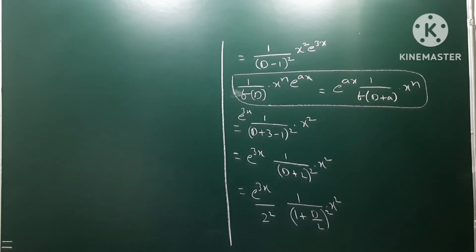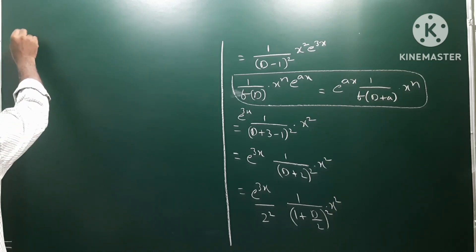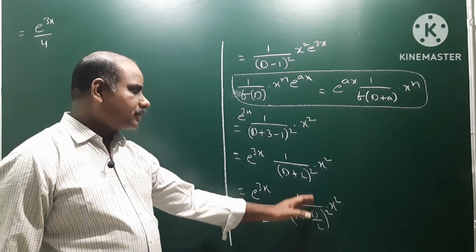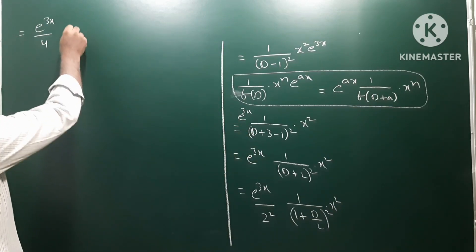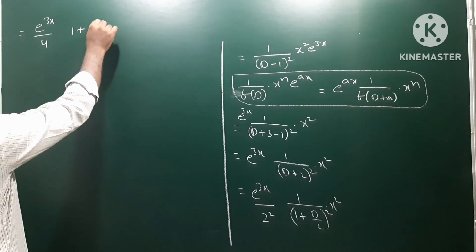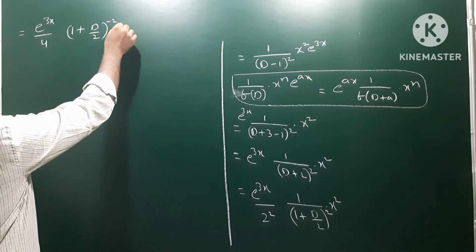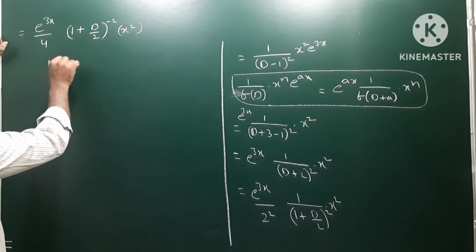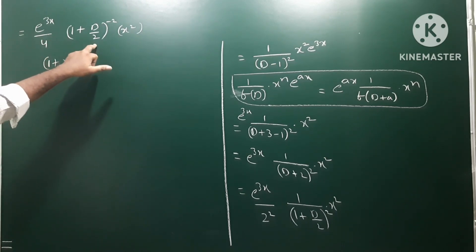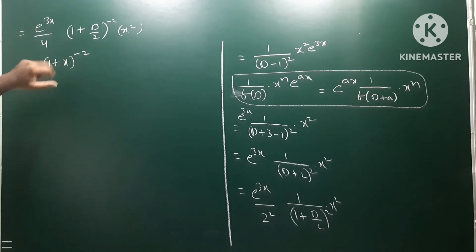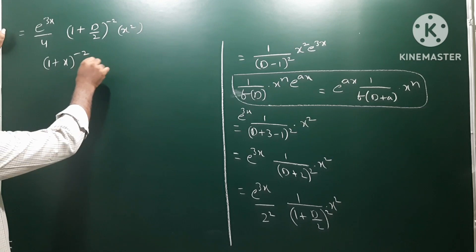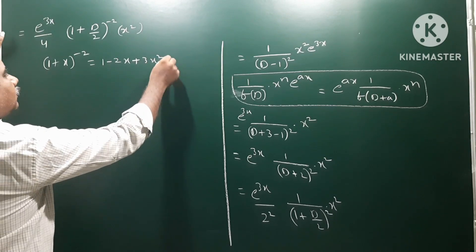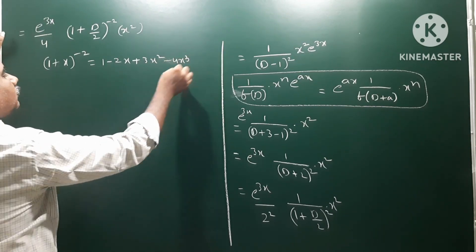Continuing, it becomes e^(3x)/4 and we transfer the denominator to the numerator as (1 + D/2)^(-2) · x². This is in the form (1 + x)^(-2), and the binomial expansion formula gives: 1 - 2x + 3x² - 4x³ + ... where x here represents D/2.